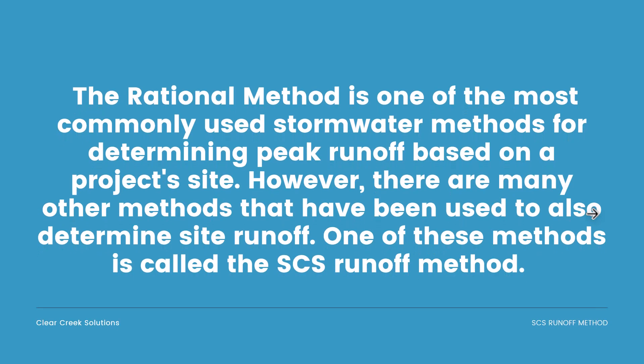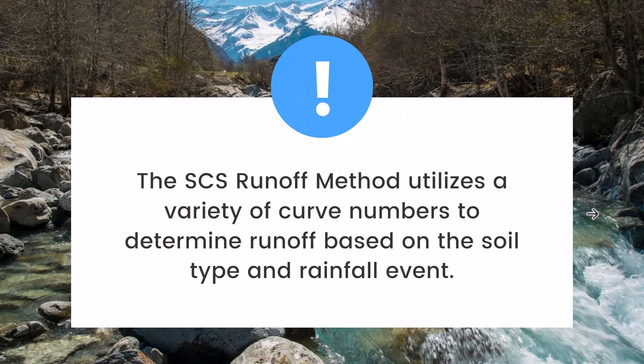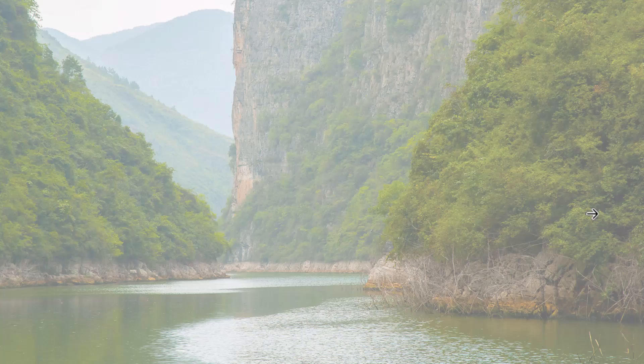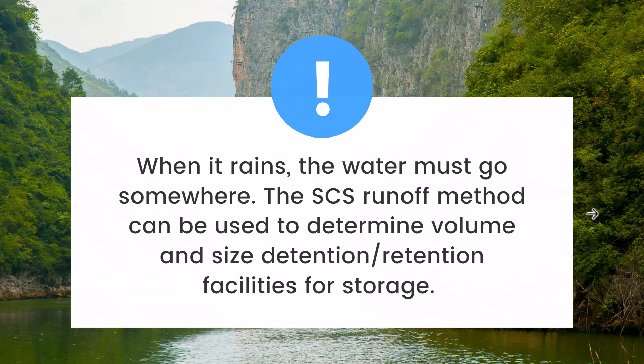The rational method is one of the most commonly used stormwater methods for determining peak runoff based on a project site. We already covered that method on this channel, so you can find videos on the rational method. However, there are many other methods used to determine site runoff, and one of these is called the SCS runoff method. It utilizes a variety of curve numbers to determine runoff based on soil type and rainfall event on your project site.